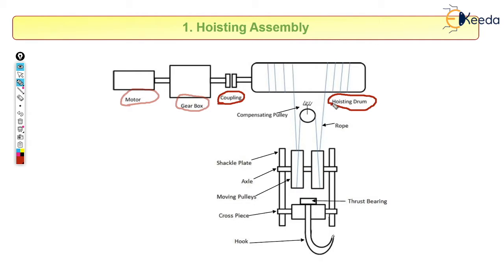Now this hoisting drum plays an important role because it has the wire rope which is around it and which lifts or hoists the load which is connected to the hook. Here you can see the lines. These lines are rope, and this rope is attached to moving pulleys.